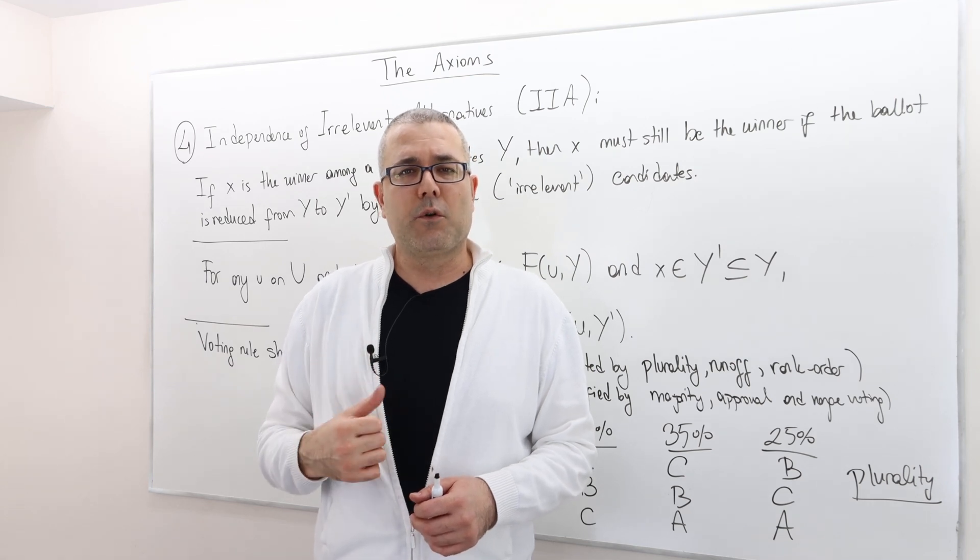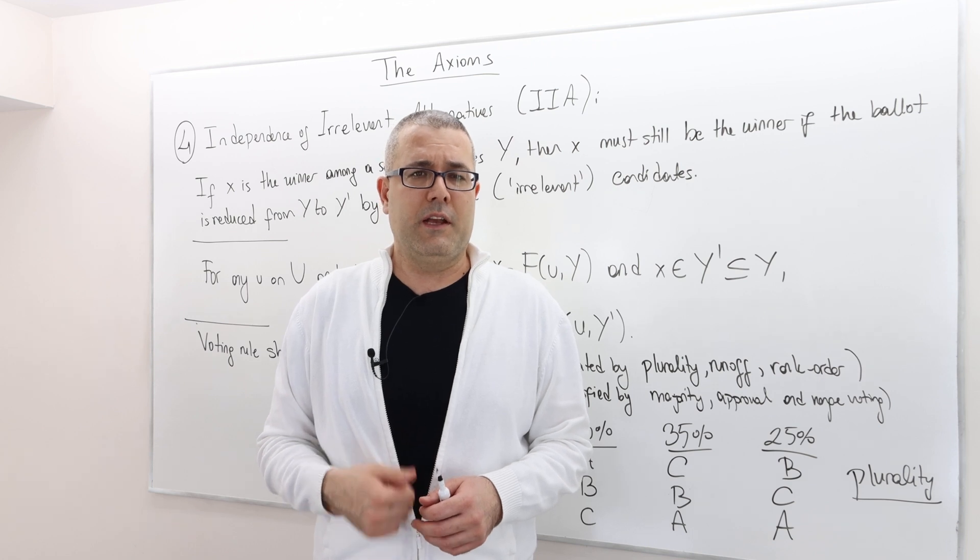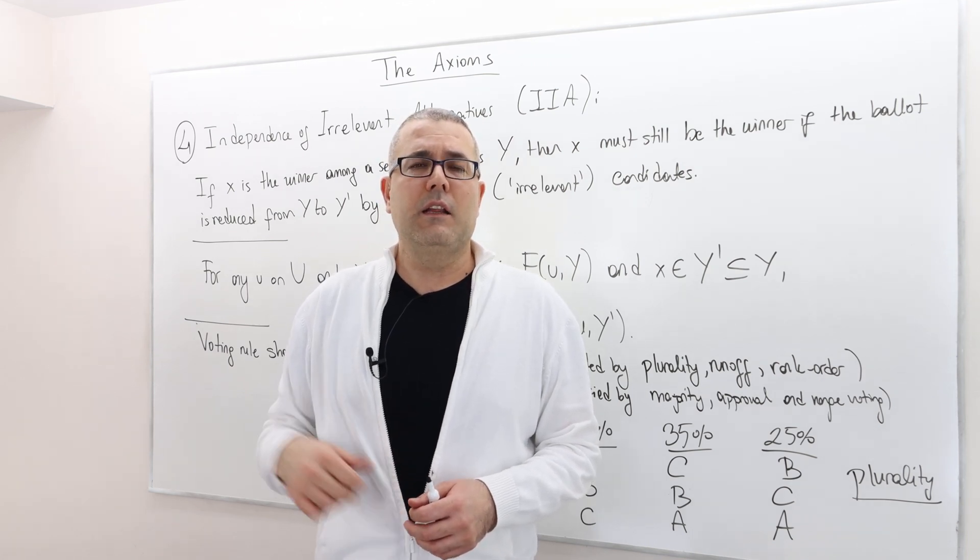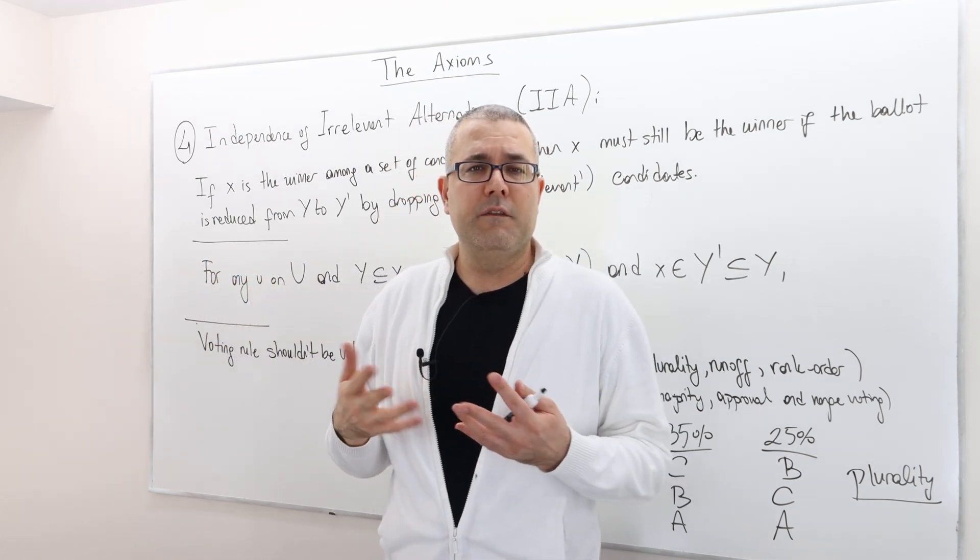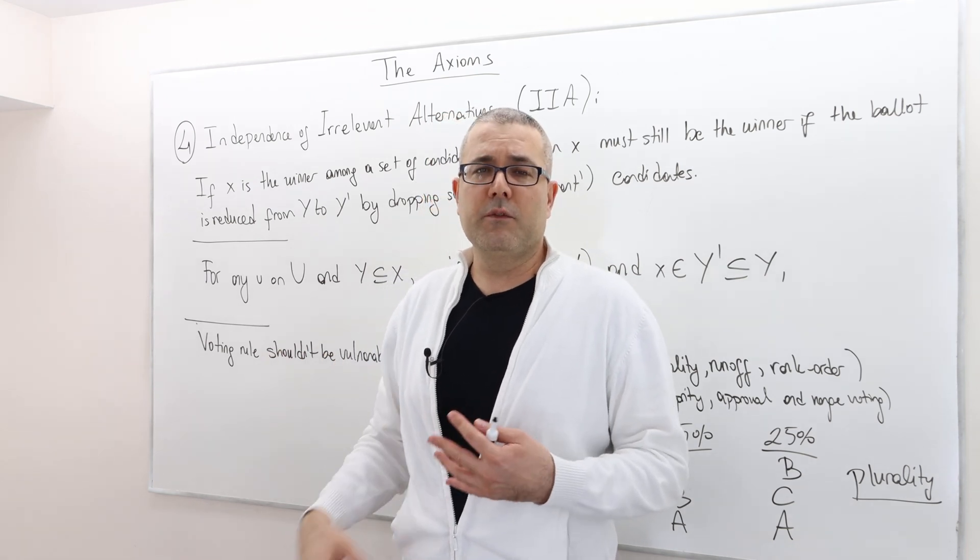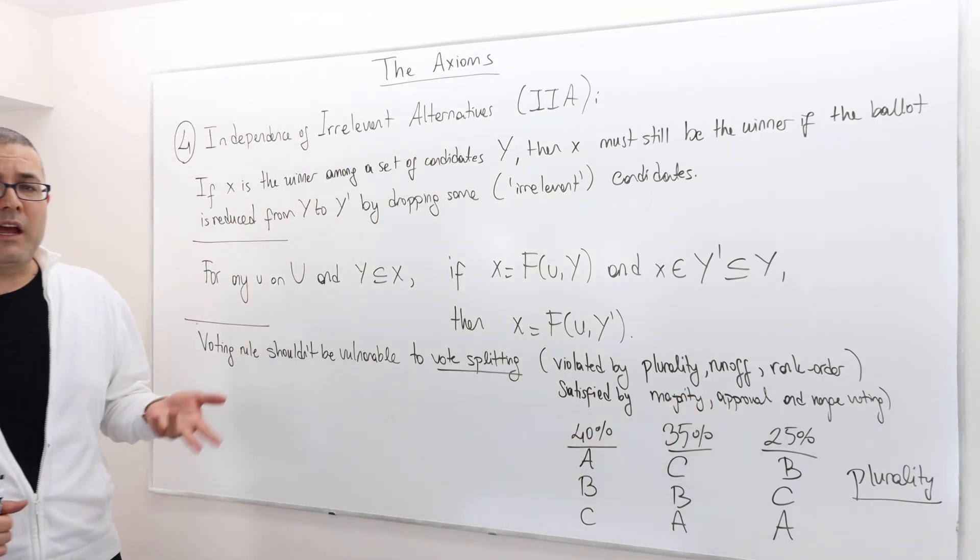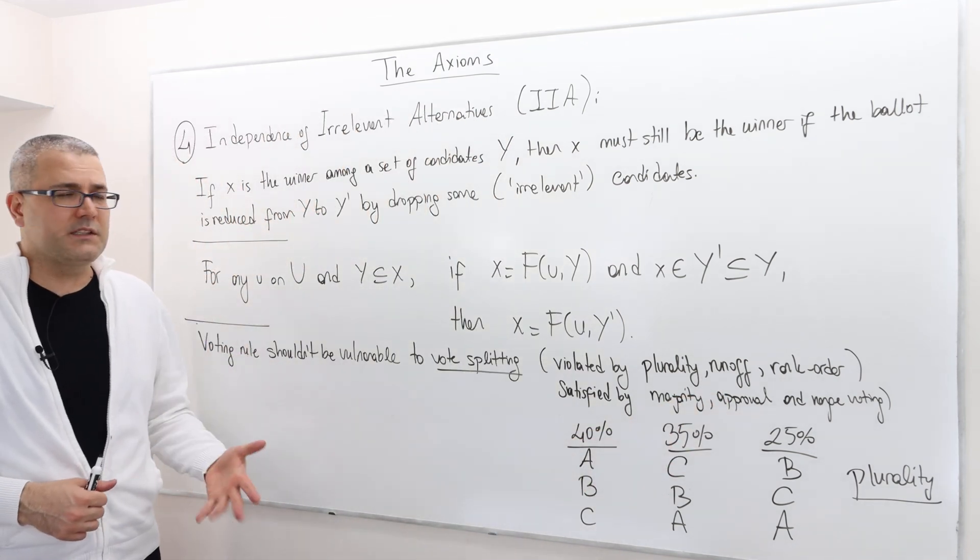All right, now this is our fourth axiom, independence of irrelevant alternatives, also known as IIA. I'll give you the intuitive description and then the formal description, and then I'm going to talk about an example where a plurality rule, for example, violates this assumption.